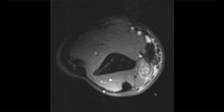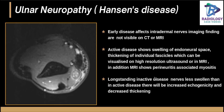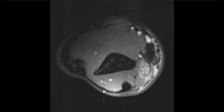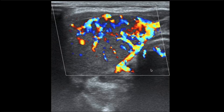Coming to the third case: this patient had neuropathic symptoms and was sent for ultrasound, where a thickened nerve was found. MRI was performed to delineate the thickening further. You can see the enlarged ulnar nerve with numerous fascicles within, and there is perineuritis and subcutaneous edema — classical features of ulnar neuropathy secondary to Hansen's disease. Early disease affects intradermal nerves, which are impossible to diagnose on imaging. In active disease, individual thickening of fascicles can be visualized on high-resolution MRI, along with a vascular pattern.